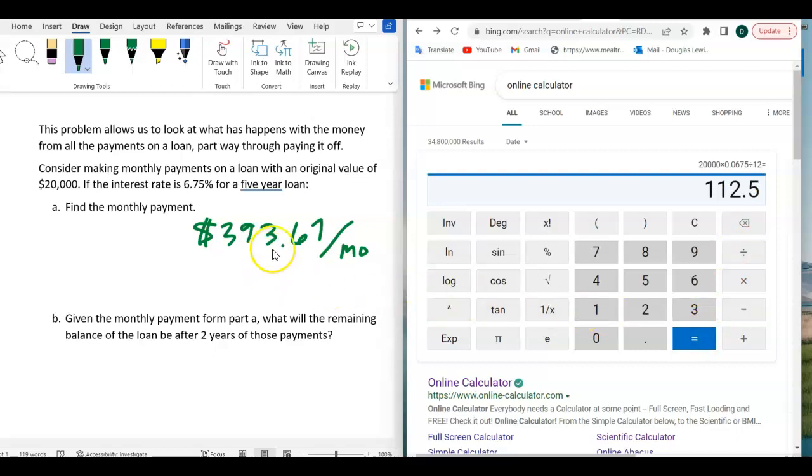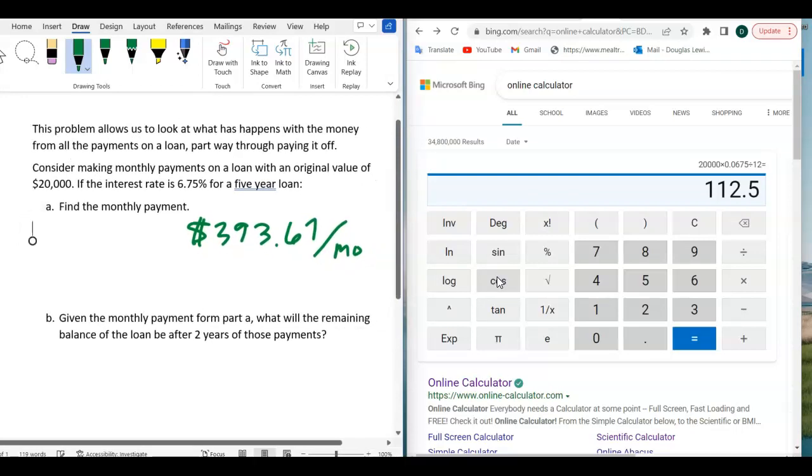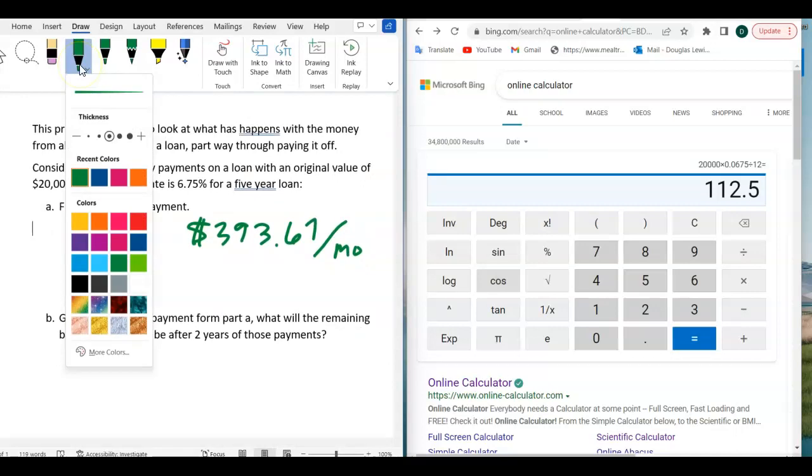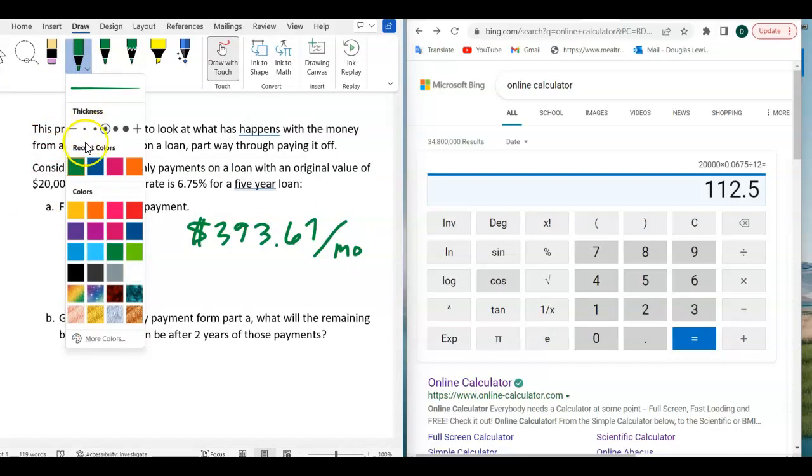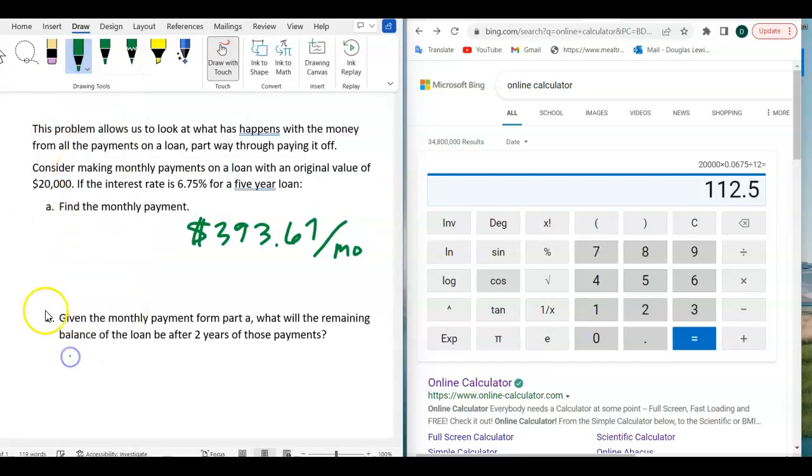So of that $393.67, this isn't necessary for this problem to know this, but I just want us to think about that for a minute. In the back of our minds, that $393 of that $393.67.